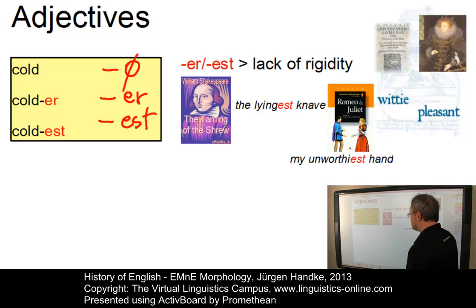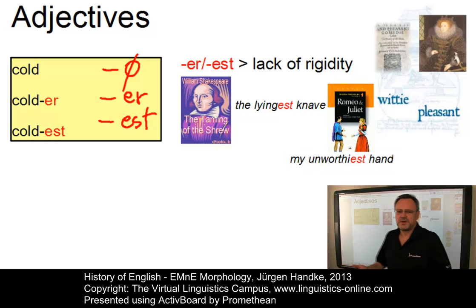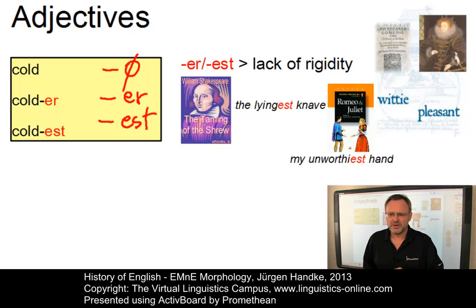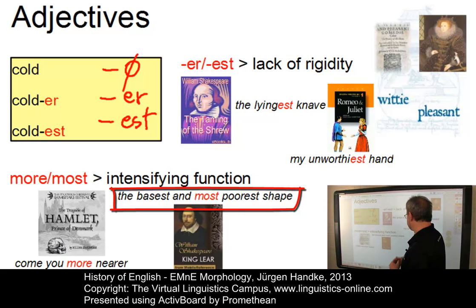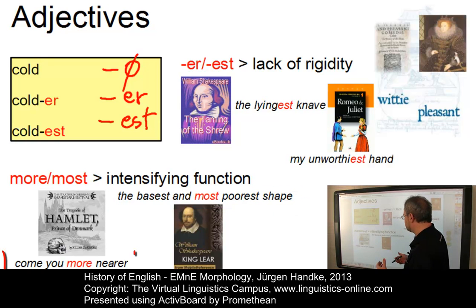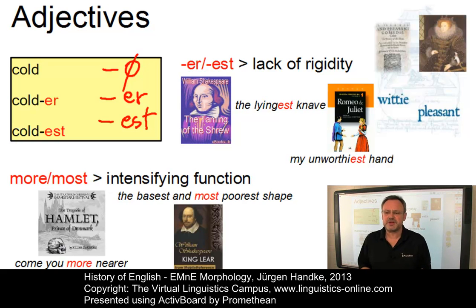These examples from Shakespeare would not occur in present-day English: the layingest nerve and unworthiest hand. Then more and most were used as intensifiers, not as markers of gradation. In early modern English, this intensifying function was obviously felt much more strongly in forms such as the basest and most poorest shape and come you more nearer — found in the works of William Shakespeare, whose dramas served as a primary source for the study of early modern English.